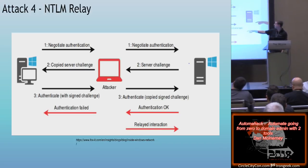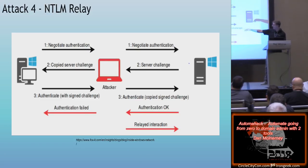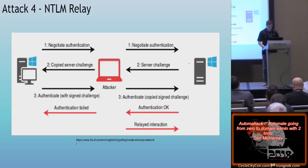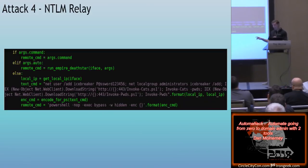Here's what NTLM relay looks like. The victim negotiates authentication; you intercept and pass it along. The server sends the victim a challenge to add to their hash. You copy that server challenge to the victim, the victim authenticates with the signed challenge, and you pass it to the server. Then when the server says authentication is good to go, you tell the victim it's messed up, and you can perform whatever actions you want on the server — like listing administrative users and dumping the password database.